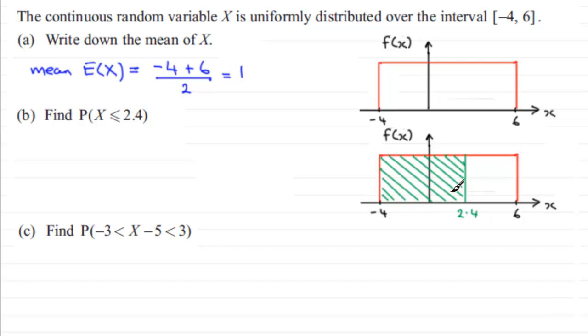To work that out it's just going to be simply the length here from minus 4 to 2.4 multiplied by the height. Problem is we don't know what the height is, but what we do know is that the area comes to 1. So if I call the height k, in other words that value up there is going to be k units.